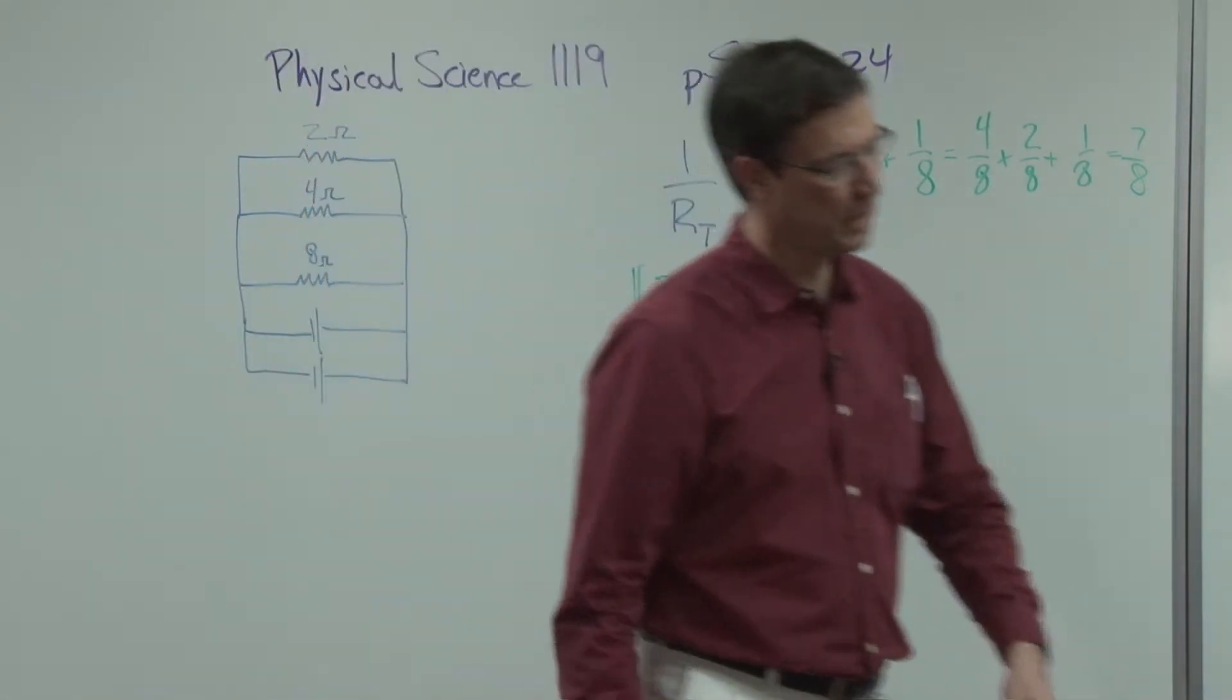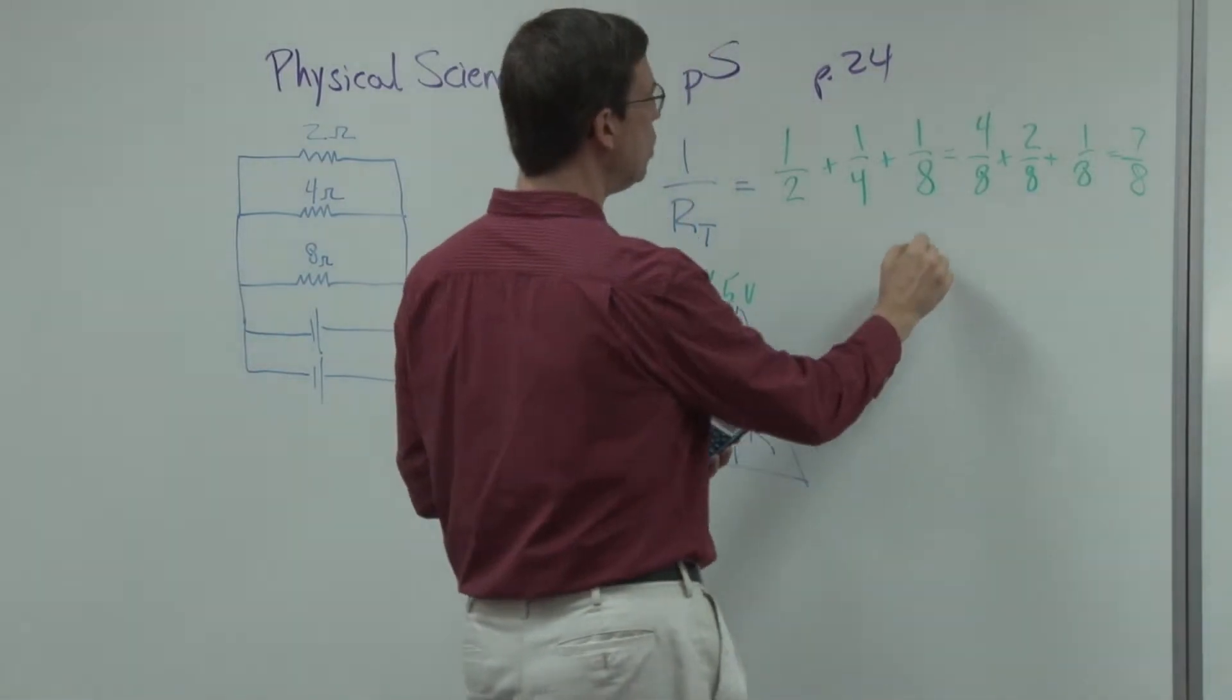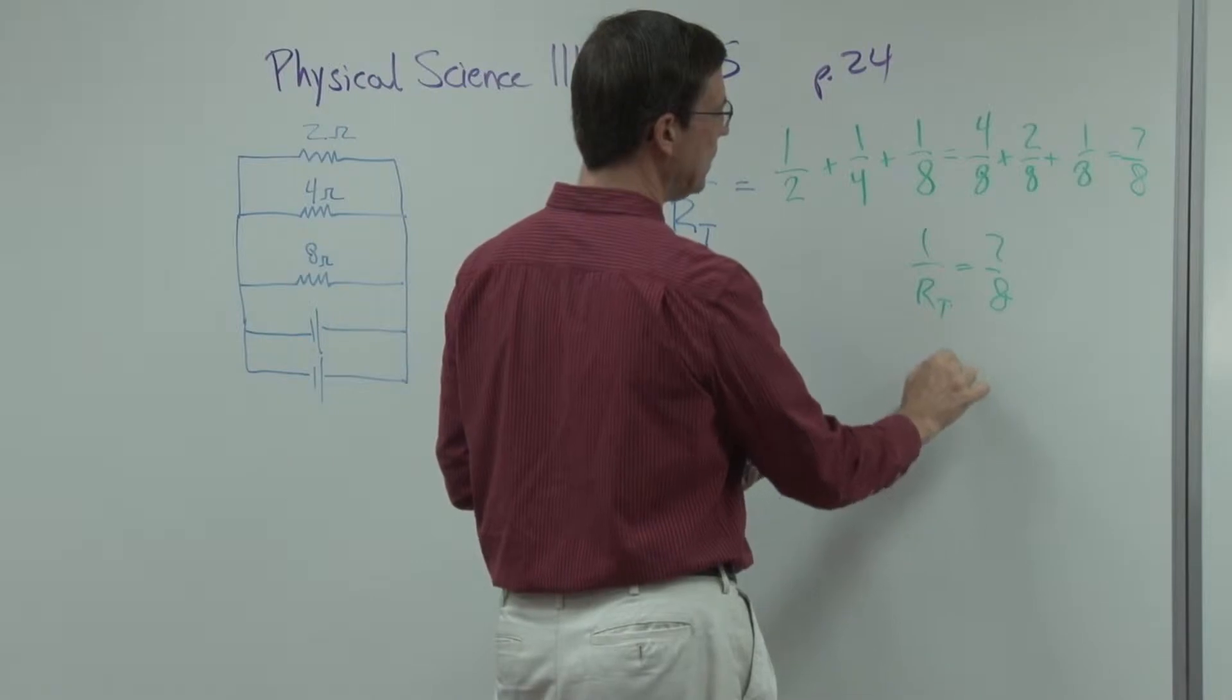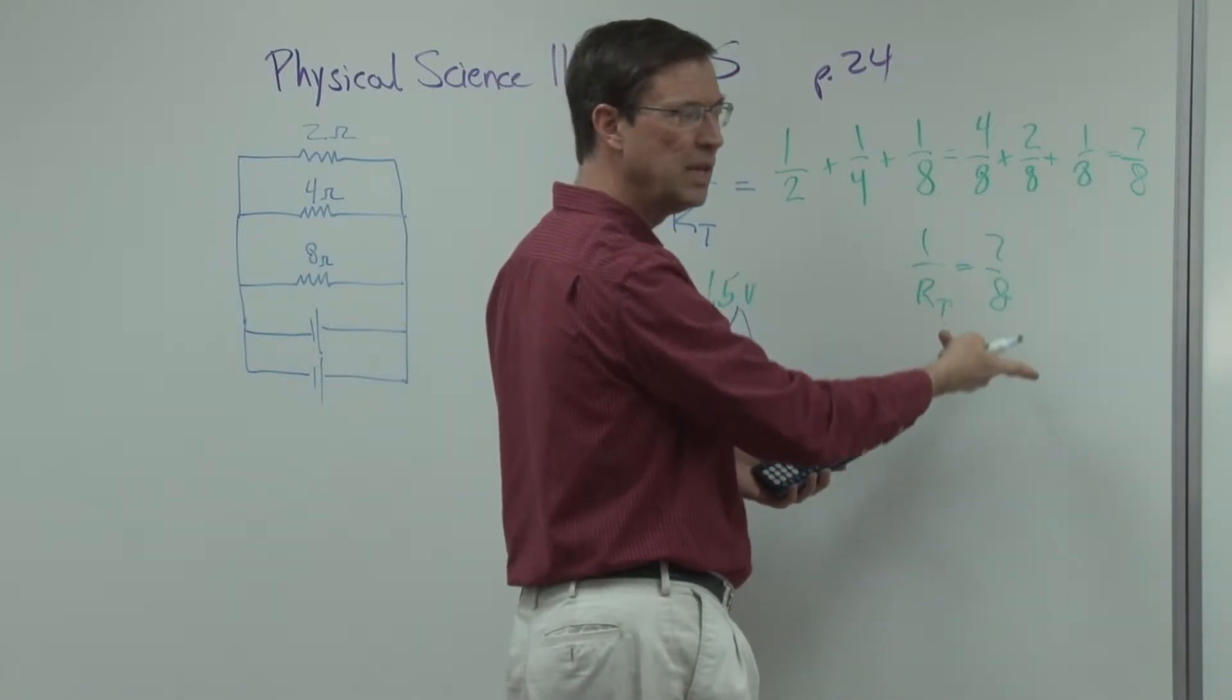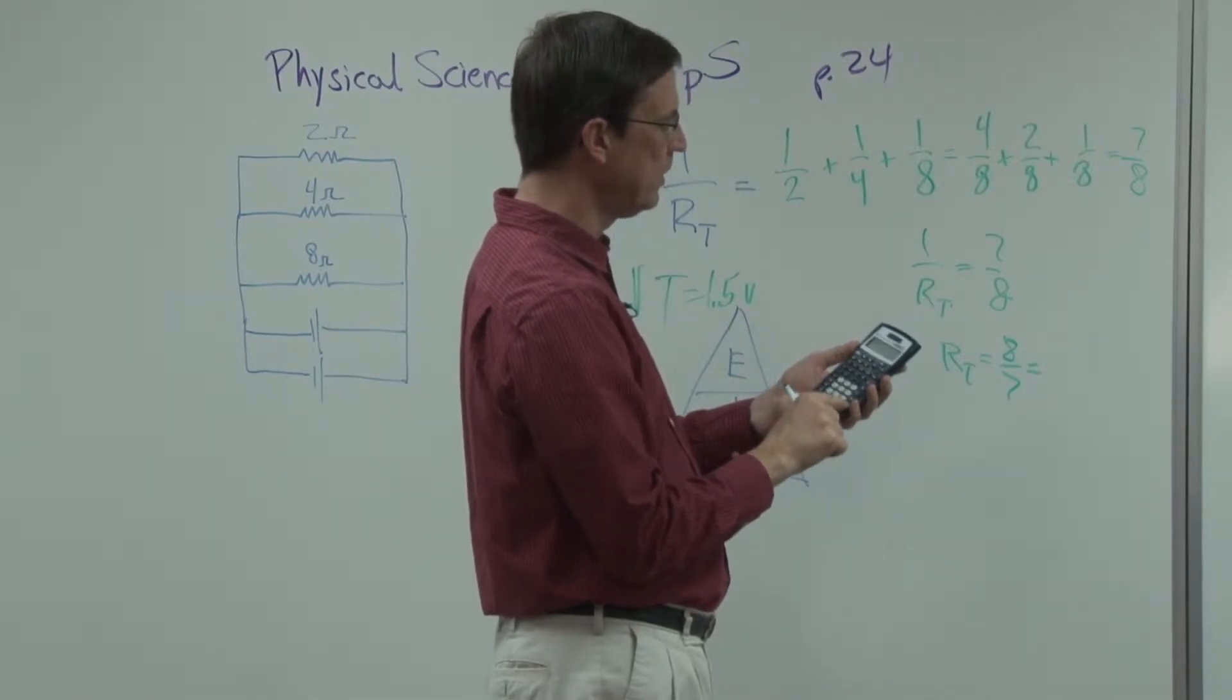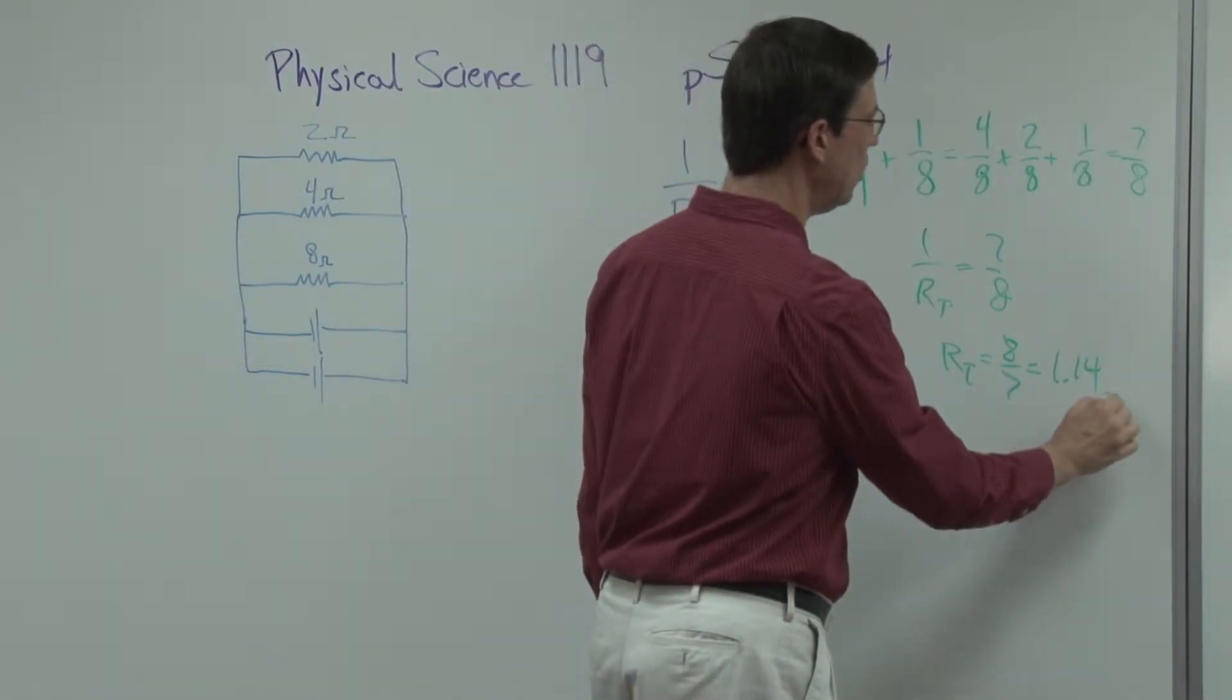Now I'm going to grab my calculator real quick. So if the total resistance equals 7 over 8, then the resistance equals the reciprocal, the inverse. If you turn this upside down, it'll be 8 over 7. So I'm going to take the calculator and take 8 divided by 7, and get 1.14. And again, that's in ohms.